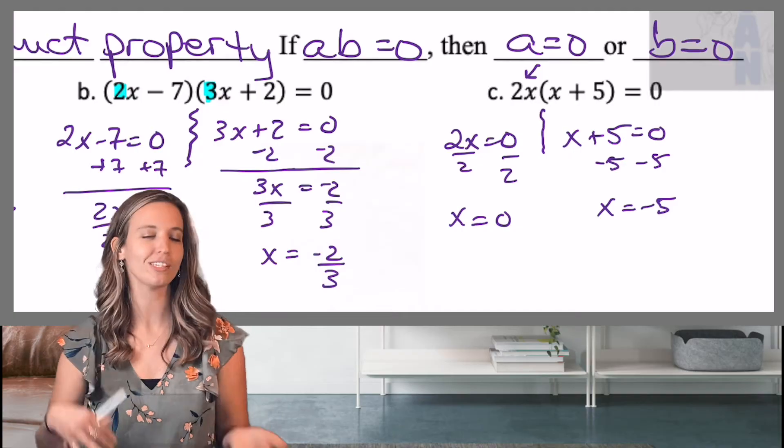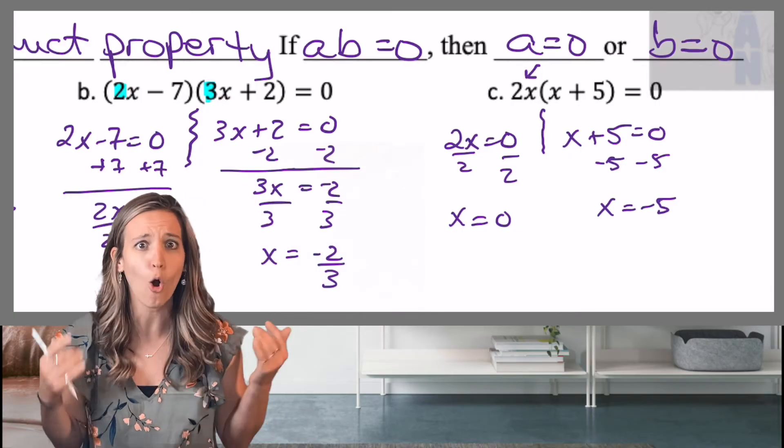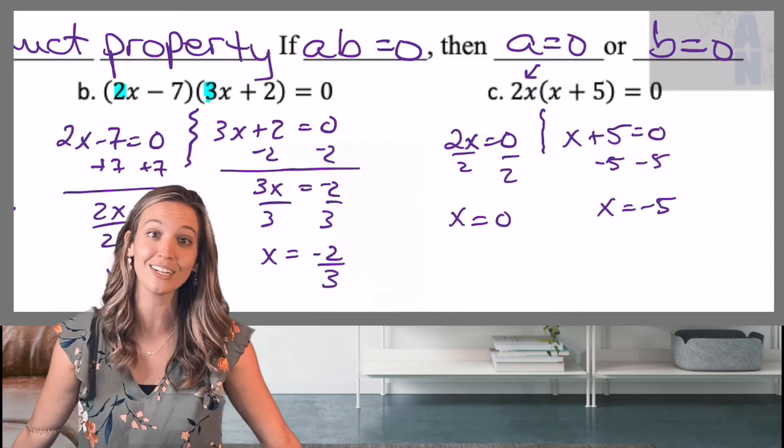Look at that. We've got X equals zero and X equals negative five. Don't let that two X equals zero throw you off. It's okay, two X equals zero, I can divide by two. Zero divided by two is just zero.